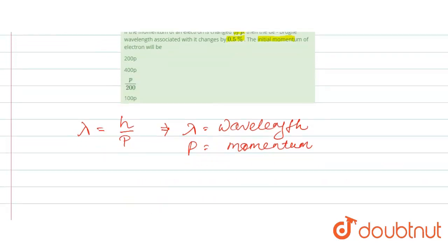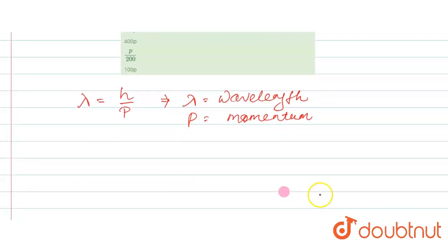So now, if you want to calculate the change in lambda, the change in lambda, that will be delta lambda by lambda, should be equal to negative delta P divided by P. The negative sign is because the relation is inversely proportional, so whenever lambda increases, your P will decrease and vice versa.